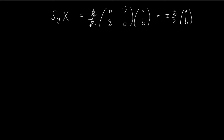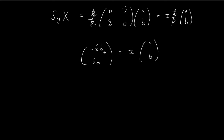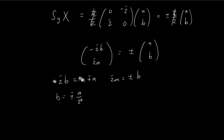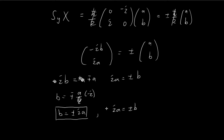The ℏ/2 factors cancel out. Multiplying the matrices, we get: first row gives 0·A + (−i)·B = −iB, and second row gives i·A + 0·B = iA. Setting these equal to plus or minus (A, B) gives two relationships: −iB = ±A and iA = ±B. These two statements are actually the same thing — moving the negative sign and dividing by i (noting 1/i = −i) gives ±iA = B in both cases.